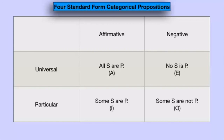Each of these forms has a label that we will use as shorthand, using the letters A, E, I, and O. So the universal affirmative, or 'all S are P' form, we will refer to as the A proposition. The universal negative, or the 'no S is P' form, we will use the letter E to refer to that kind of proposition. And so on.